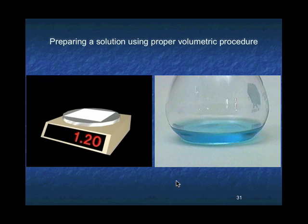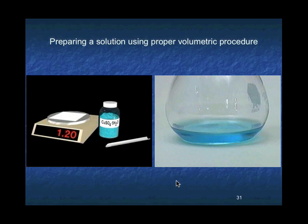To prepare a solution of known concentration from a solid solute, we must first weigh out an appropriate amount of the solid. For example, to prepare 250 milliliters of a one molar solution of copper sulfate, we first weigh out 0.250 moles of copper sulfate. Most commonly, copper sulfate is available as the pentahydrate. The formula mass of copper sulfate pentahydrate is 249.7.